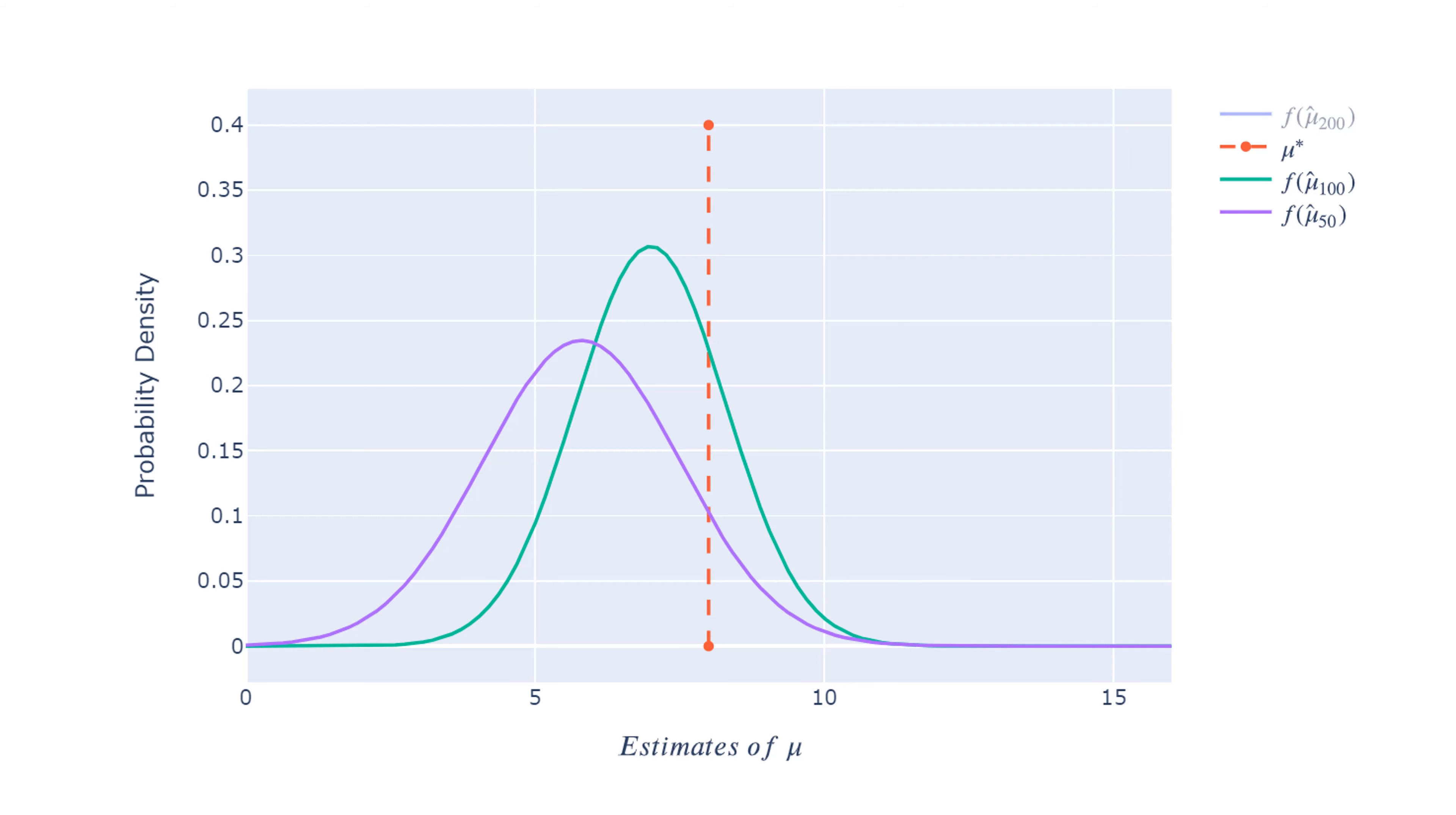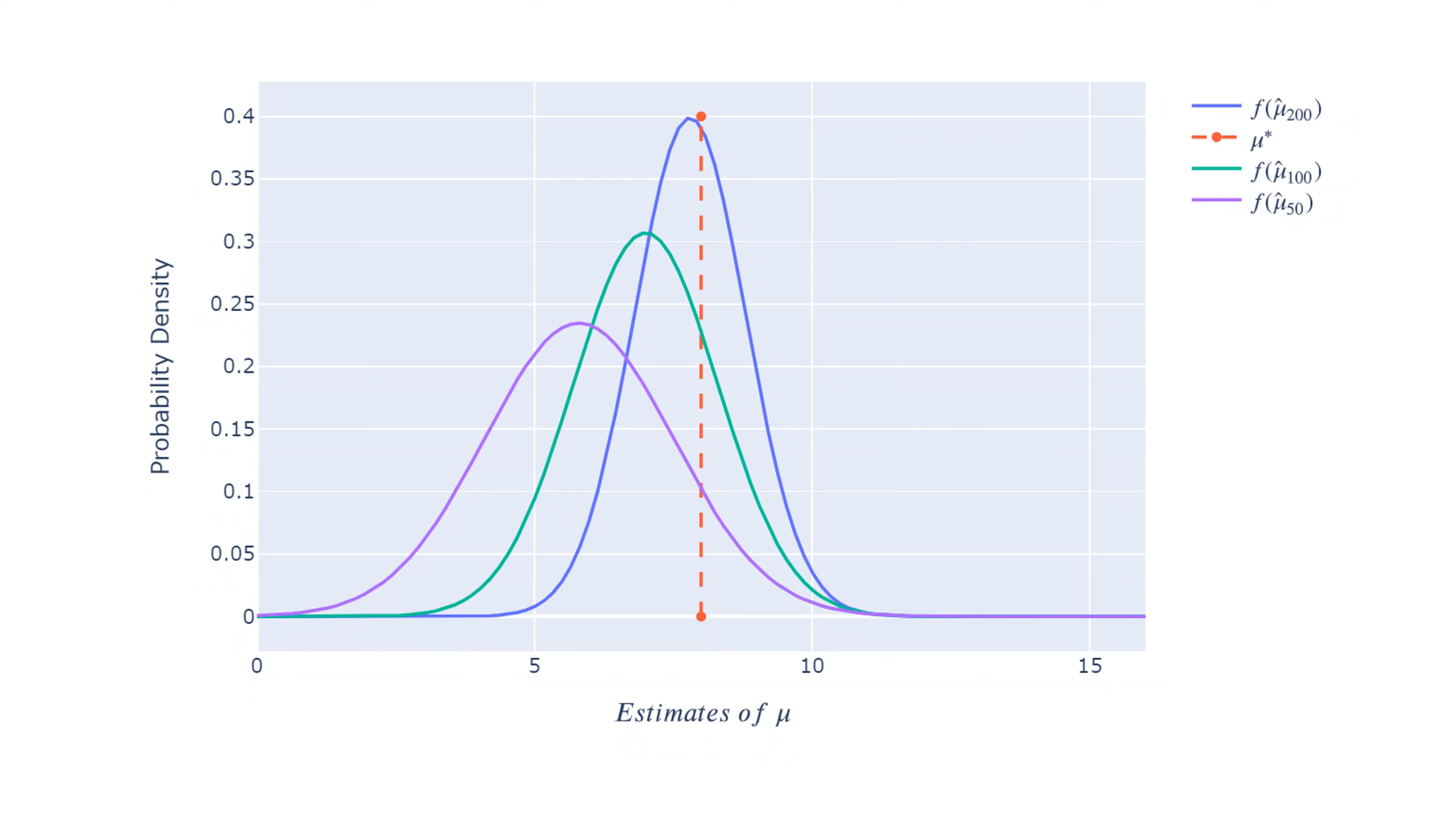However, for a biased estimator, if we increase the sample size from 50 to 100, the variance will decrease for sure, and the bias might decrease as well. Now let's add this blue estimator based on a sample size of 200 observations.